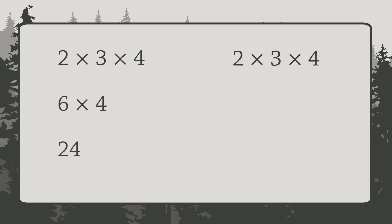Let's start over but this time we'll begin with 3 times 4. 3 times 4 equals 12 and 2 times 12 equals 24. We get the same answer.